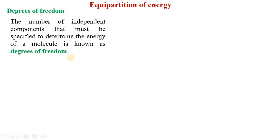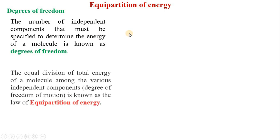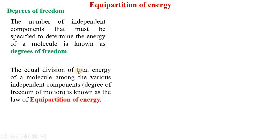A molecule's total energy is divided into several components. Each component is called a degree of freedom. The equal division of total energy of a molecule among the various independent components is called equipartition of energy.